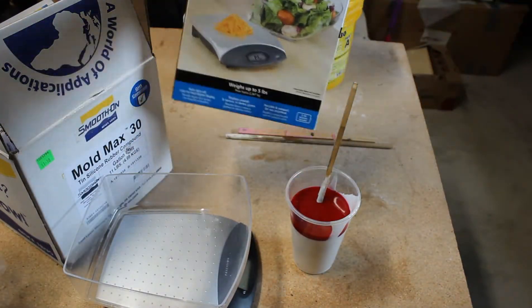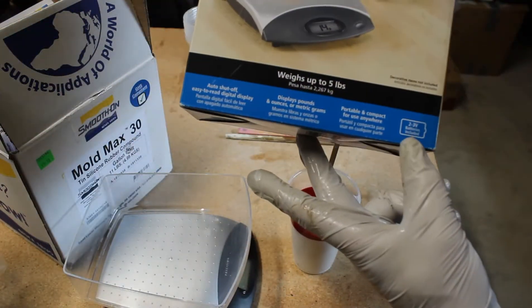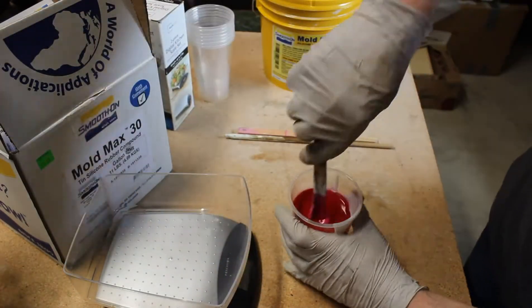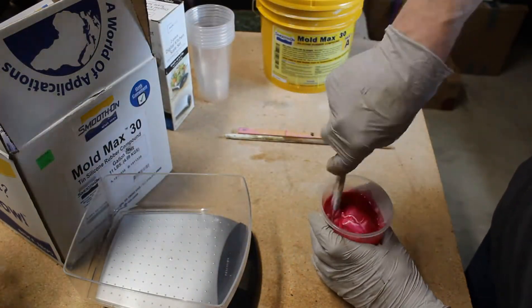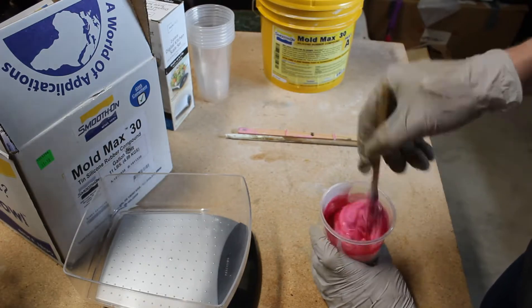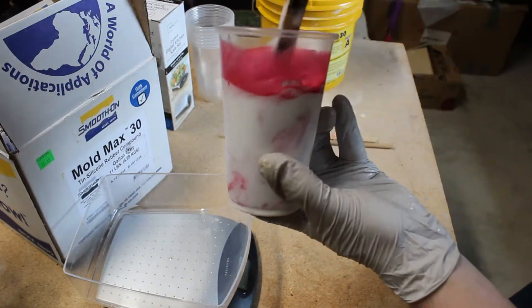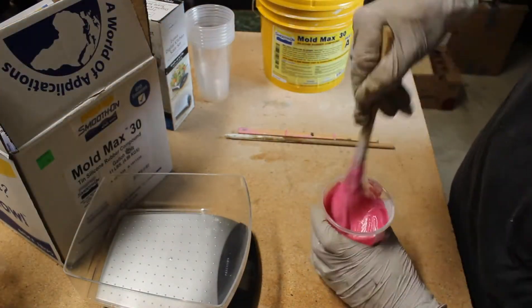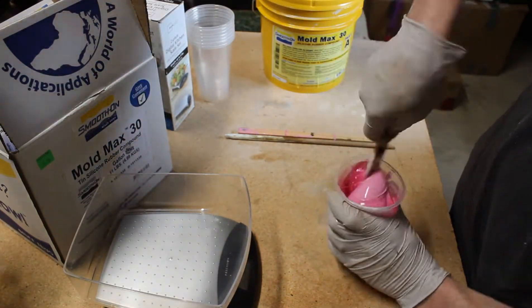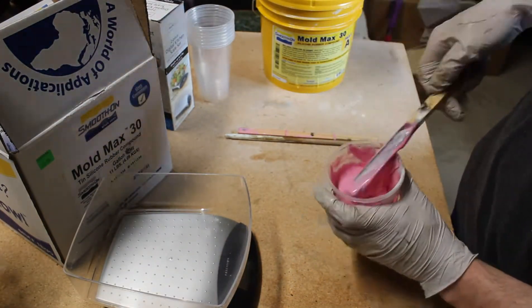It has a real heavy red color, but as you mix it up it'll turn pink. And one of the benefits to using this transparent cup is that you can see how well you're mixing it. So you want to scrape the sides and scrape the bottom.